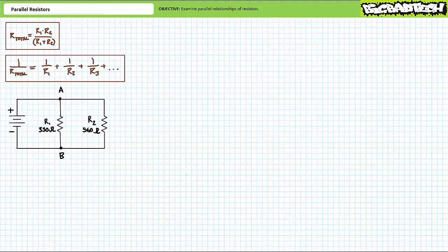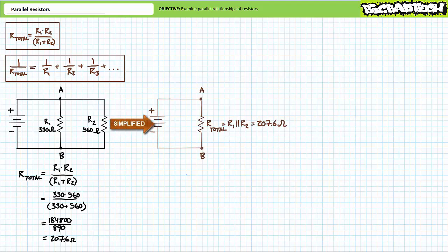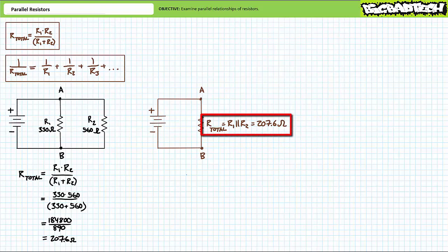Since this configuration has two resistors, let's apply the two-resistor formula. R1 times R2 is 184,800. R1 plus R2 is 890. 184,800 over 890 yields a total resistance of roughly 207.6 ohms. This implies the source would be none the wiser if the parallel combination of two resistors was swapped out and a single 207.6 ohm resistor took their place. The shorthand for resistors in parallel is the double pipe symbol, implying a parallel simplification has occurred.